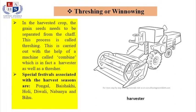After harvesting, the next step is threshing, also known as winnowing. When the crops are harvested, they are separated from chaff. Chaff, in general, means worthless things, but in terms of crop production, chaff is the husks of grain or other seeds separated by winnowing or threshing. The tool required is known as a harvester, as shown in the slide.